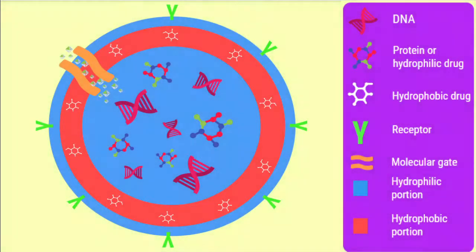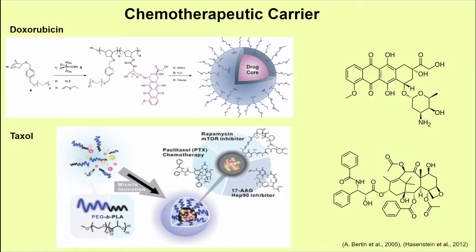The primary motivation for developing polymersomes is their applications in drug delivery of hydrophilic and hydrophobic drugs. For example, Taxol and Doxorubicin are chemotherapeutics that have been encapsulated in polymersomes for passive delivery to tumors. Doxorubicin is water-soluble and gets embedded inside the core of the polymersome, whereas Taxol is water-insoluble and gets embedded inside the membrane of the polymersome itself.